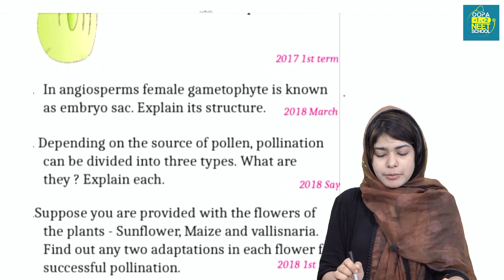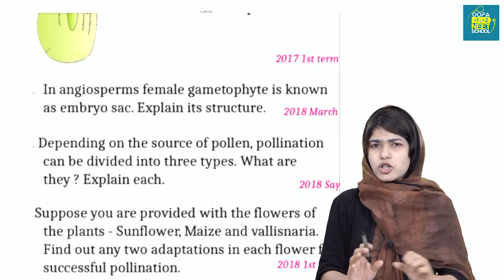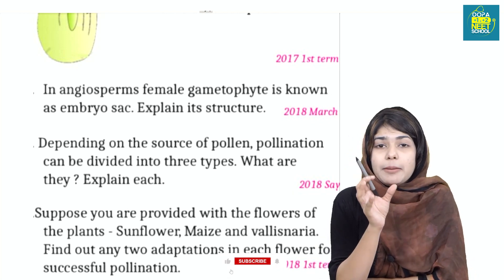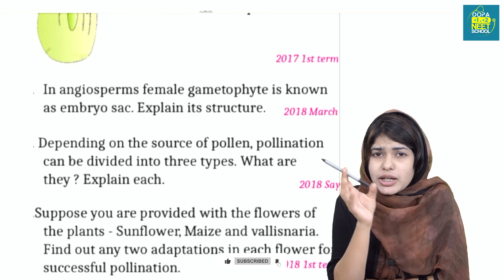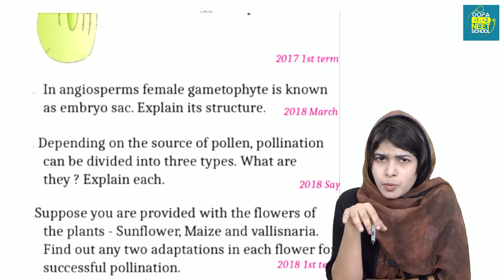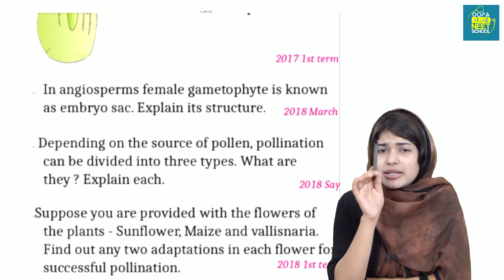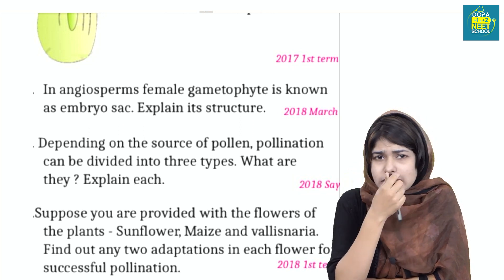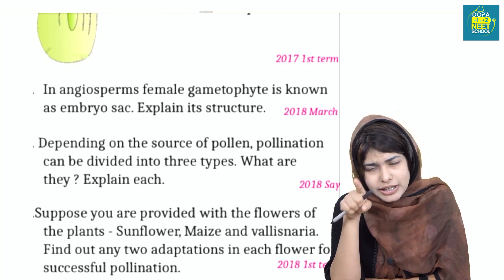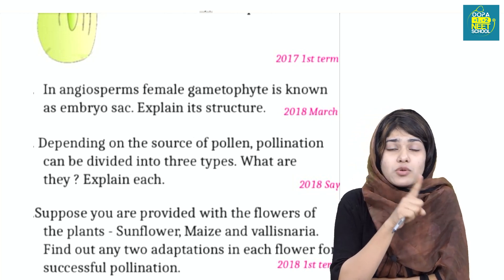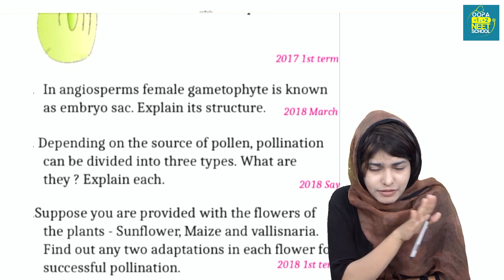In angiosperms, the female gametophyte is known as the embryo sac. Explain its structure — this is very important. The embryo sac structure includes polar nuclei, antipodal cells, and the synergids. How to form the two-cell stage, four-cell stage, and eight-cell stage is important.